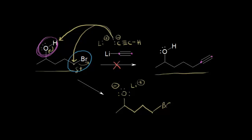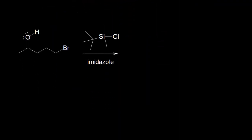Let's show how we can use a protecting group. Over here on the right we have tert-butyl dimethylsilyl chloride — TBDMSCl. There's a tert-butyl group attached to a silicon, and then two methyl groups and a chlorine attached to the silicon. All of those — the carbons and the chlorine — are more electronegative than silicon, so they withdraw electron density from the silicon, making it partially positive. So the silicon can function as an electrophile.